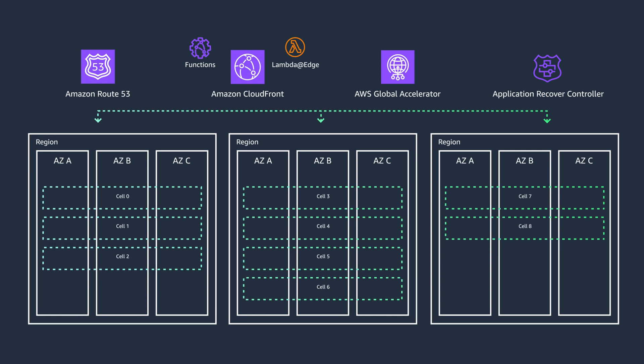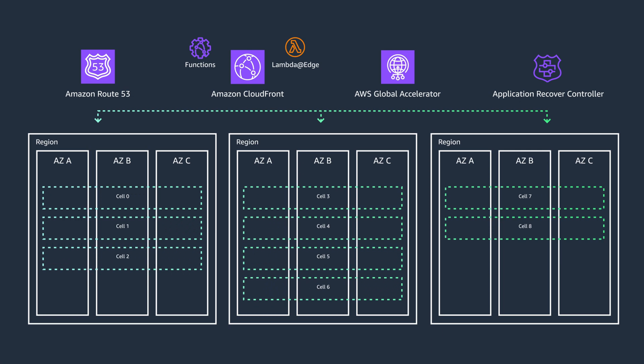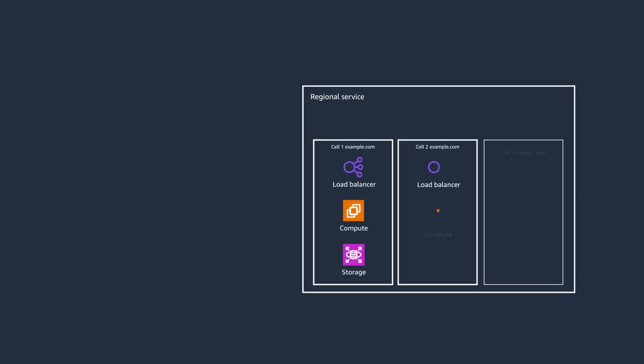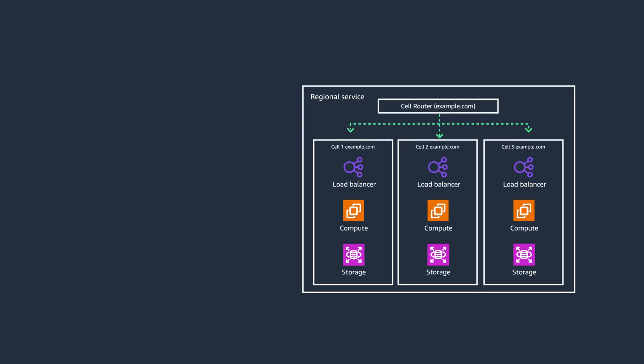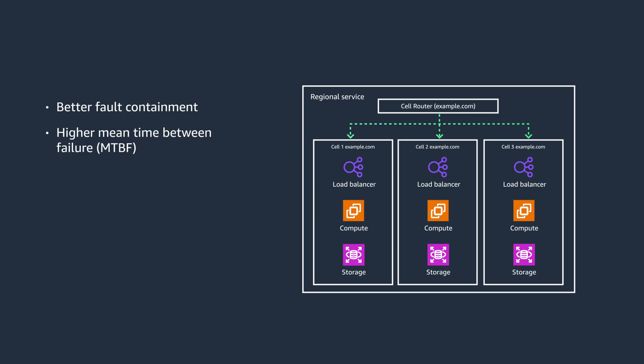This allows you to easily recover against regional outages. Overall, cell-based architectures provide better fault containment through individual cell isolation, higher mean time between failures meaning faults happen less often, lower mean time to recover by relocating affected cells to another location, and easier testability on an individual cell basis with safer deployments to singular cells.